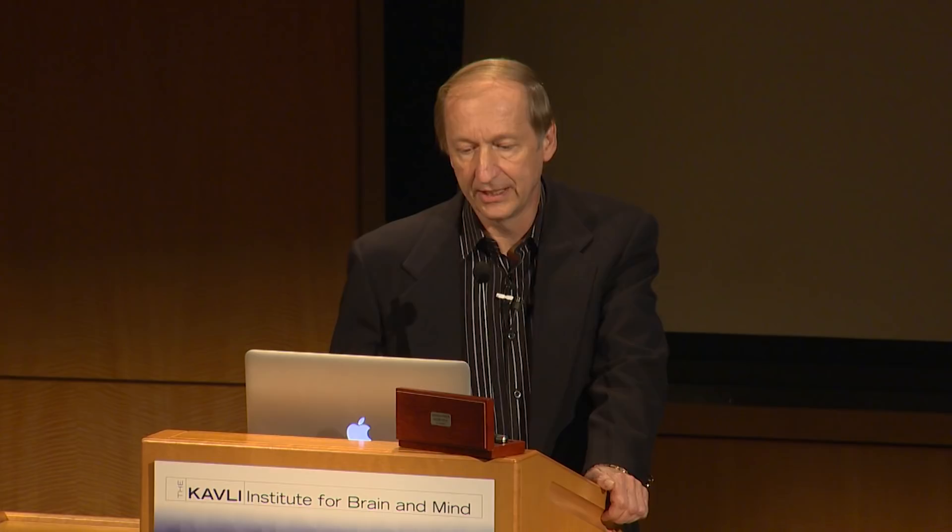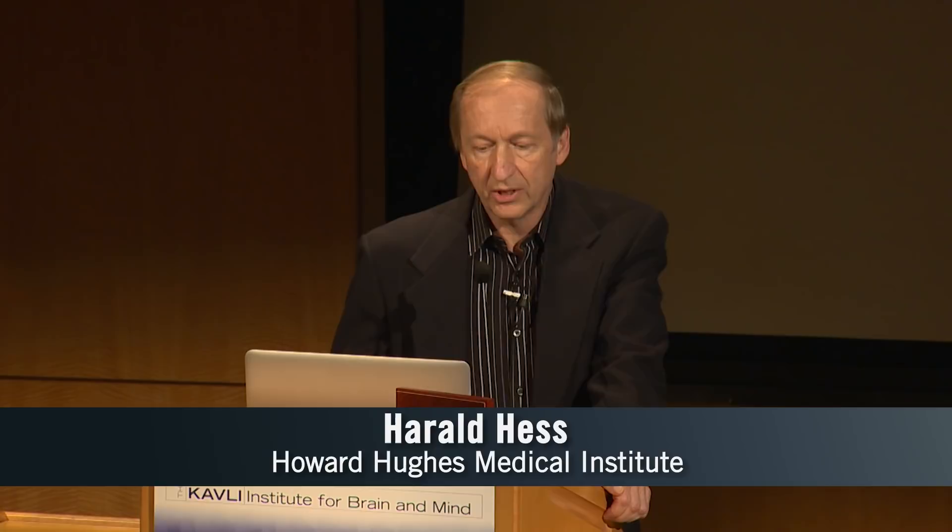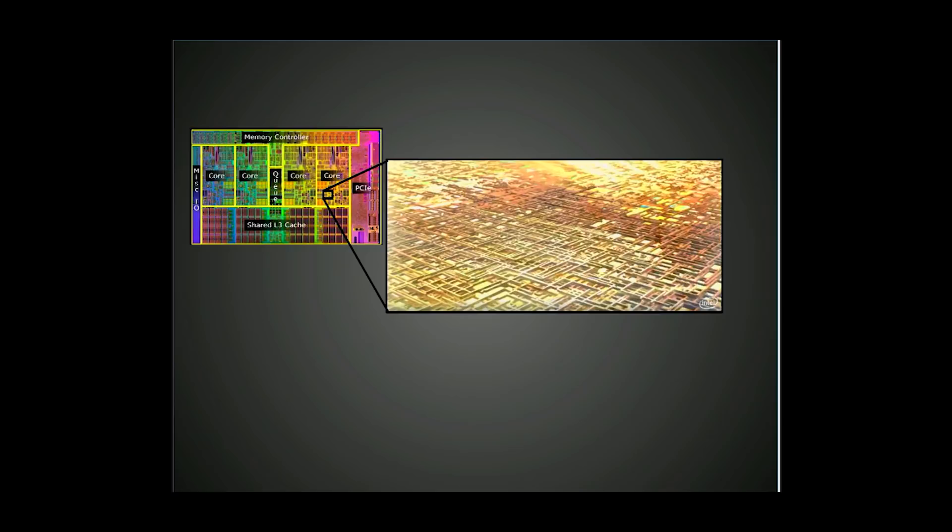If you look at a small region and zoom in on it, you'll find it's covered by a vast mesh of tiny, tiny wires. This is about maybe a dozen layers thick. Underneath it all are the actual switches — the transistors — which do the switching.